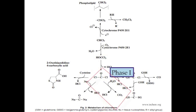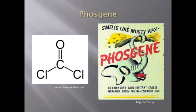If subsequent hydrolysis of phosgene occurs, the oxidative pathway will produce hydrochloric acid and the main metabolite carbon dioxide. Non-hydrolysis of phosgene will form covalent adducts with enzymes, proteins, and the polar heads of phospholipids.